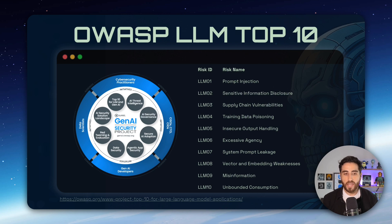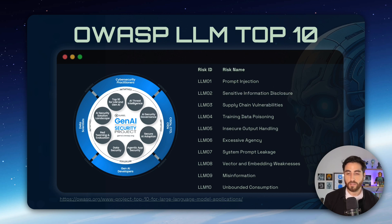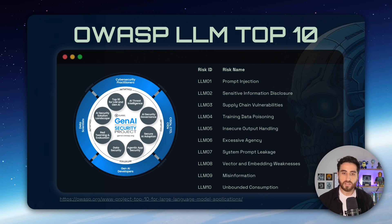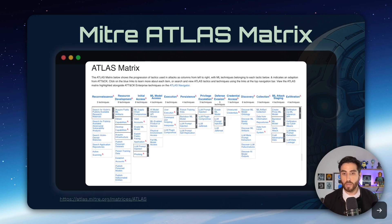The Gen AI Security Project at OWASP is also leading several initiatives, such as how to secure an agentic system, how to understand and exploit LLMs, and how to conduct red teaming exercises. This is a very interesting resource if you are trying to secure AI systems today.